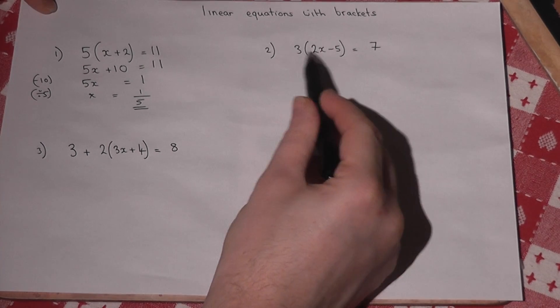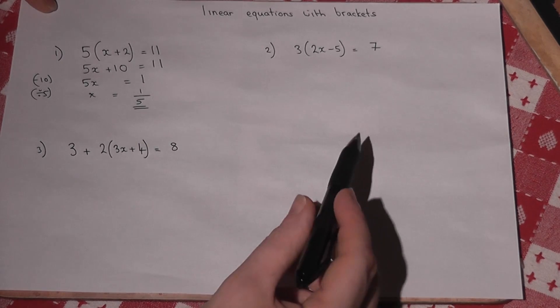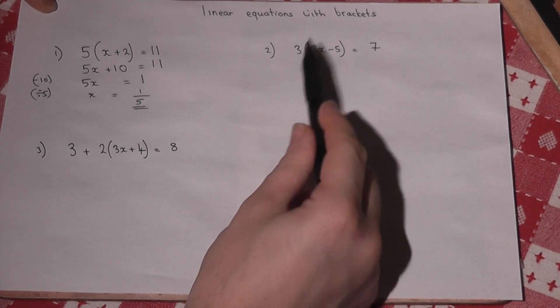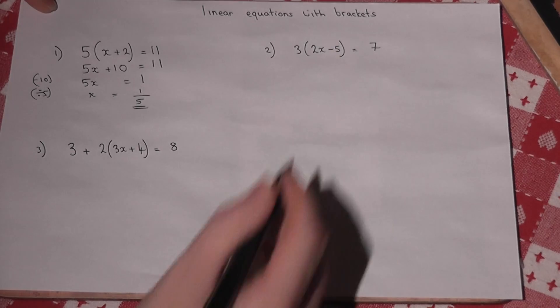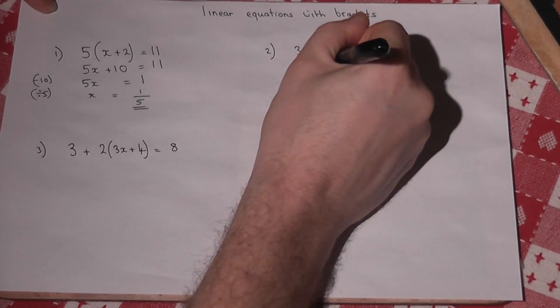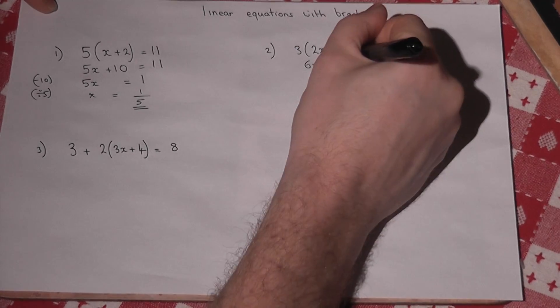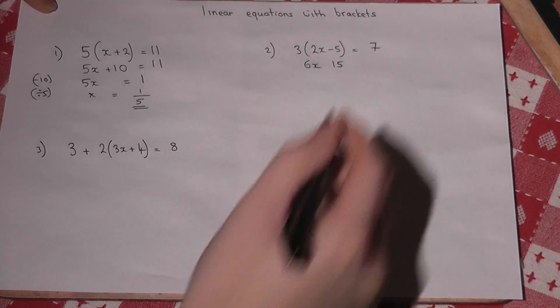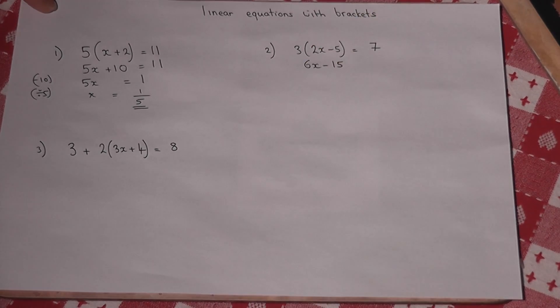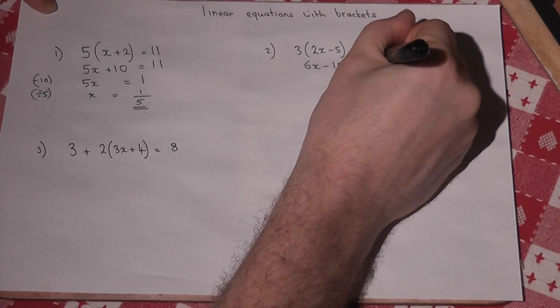The second one, bracket again, so we expand the bracket. I times both things by 3. So 3 times 2x is 6x. 3 times 5 is 15. There's a minus there, so it's minus 15. And that just equals 7.